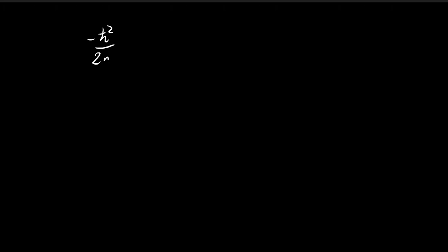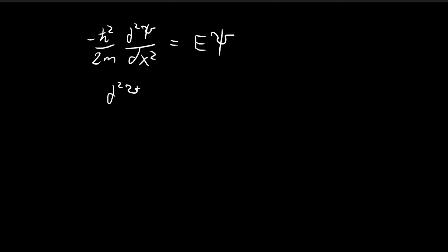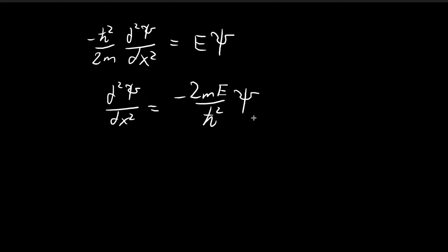The time-independent Schrödinger equation tells us that this expression is equal to energy multiplied by psi. Rearranging the constants, we can collect all these constants on one side, so we have all these constants multiplied by psi.